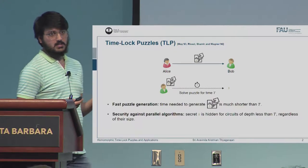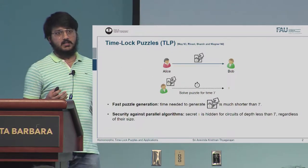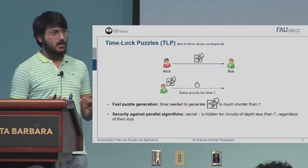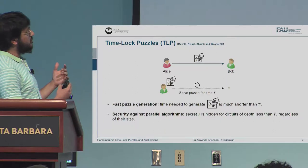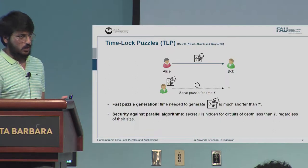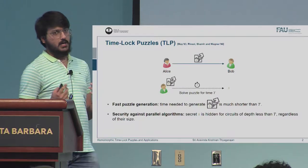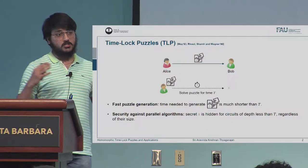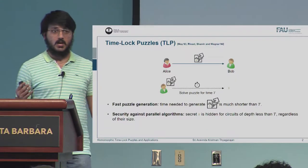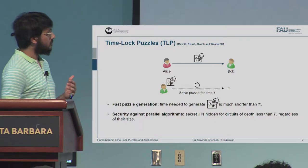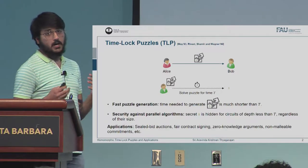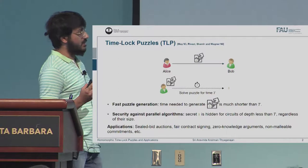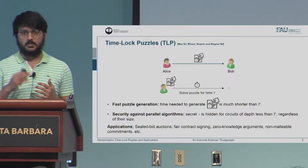What are the properties of such a timelock puzzle? It requires Alice to be considerably faster in generating this puzzle, meaning that she takes much shorter time than T that is required to solve it. And as a security requirement, Bob, when he tries to solve the puzzle, no matter how much parallel computation power he uses, he cannot solve the puzzle before time T. This primitive has found applications in wide-ranging spheres, namely sealed bid auctions, fair contract signings, zero-knowledge arguments, non-malleable commitments, and so on.